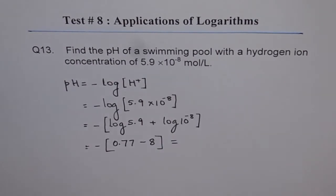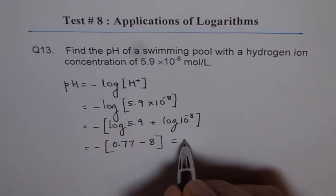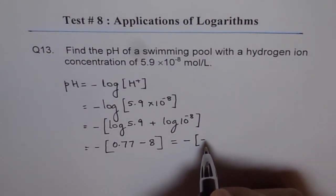So that gives us minus of 0.77 minus 8, which equals minus 7.229.